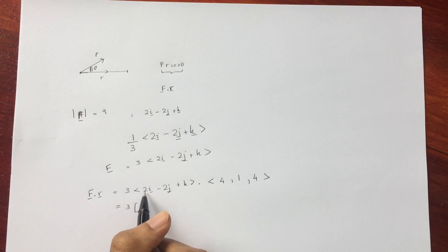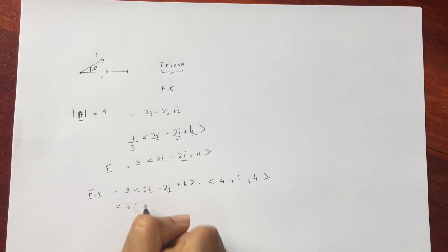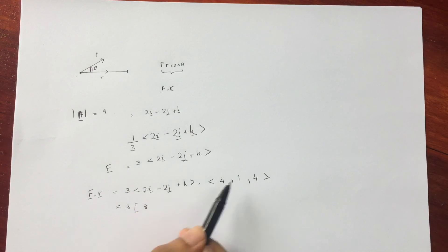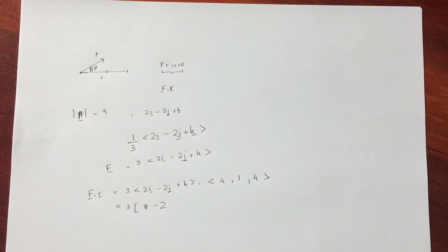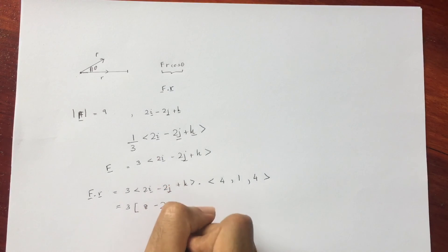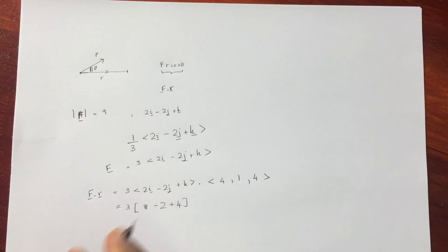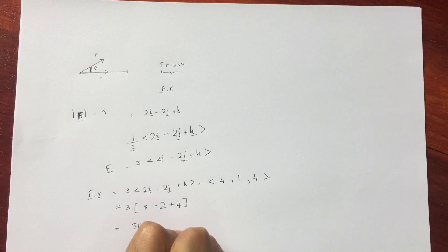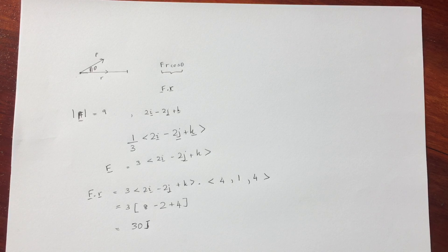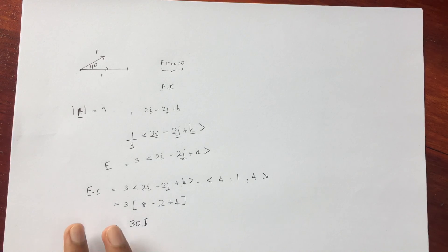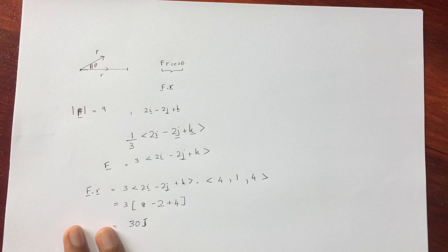Computing the dot product: 2 times 4 is 8, then minus 2 times 1 is minus 2, and plus 1 times 4 is plus 4. Multiplying by the scalar 3: 3 times (8 minus 2 plus 4) equals 3 times 10 equals 30. So the answer is 30. You need to give it in the right format — it may be 30 joules, but since no units were given in the question, you can simply state 30.